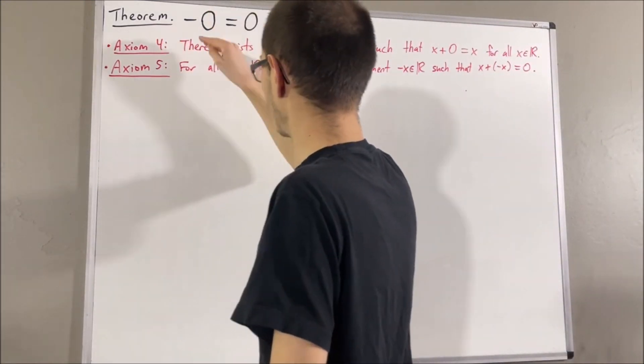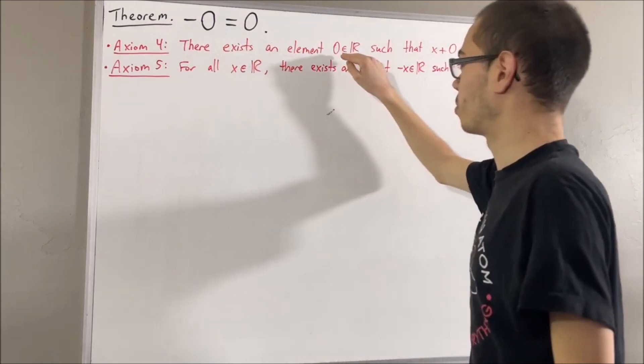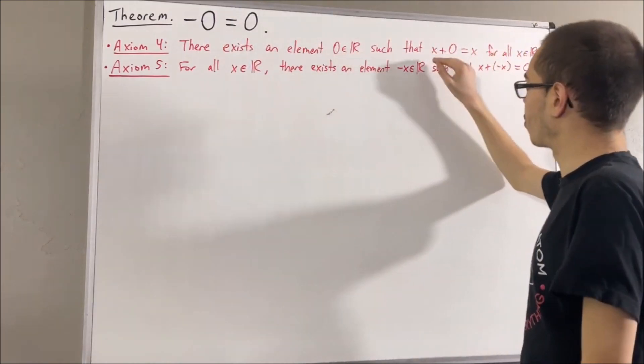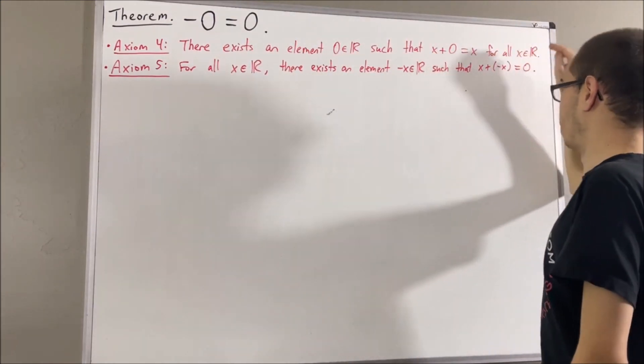We have axiom 4, which tells us that there exists a real number, which we call zero, that has the property that x plus zero equals x for all real numbers x.